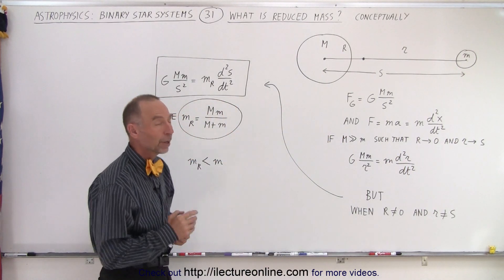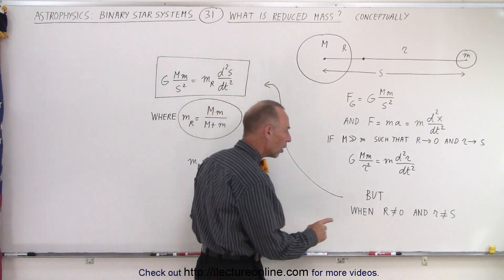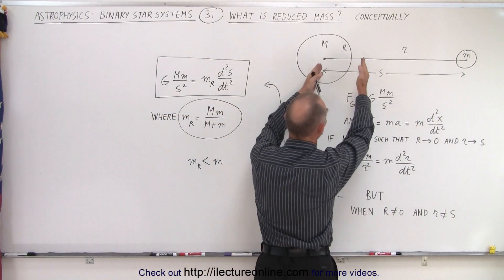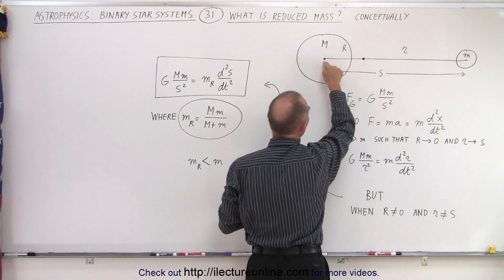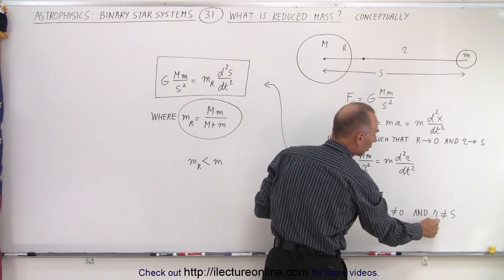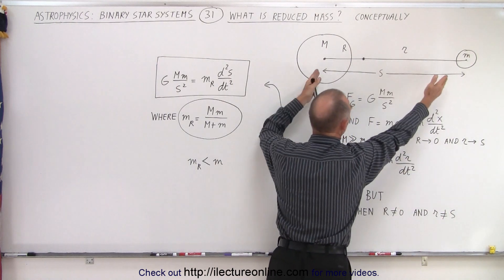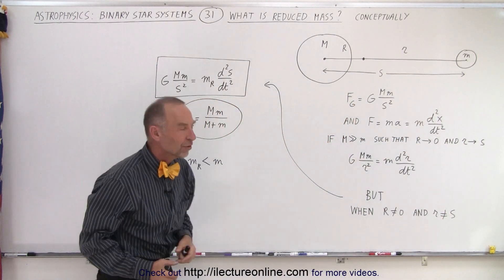But what happens when R is not zero, when this is significant, that the barycenter is some distance away from the center mass of the large object, and therefore r is not equal to the total distance s? What happens now?